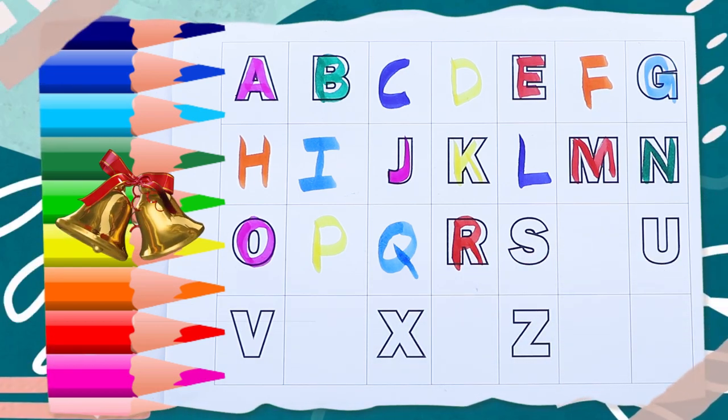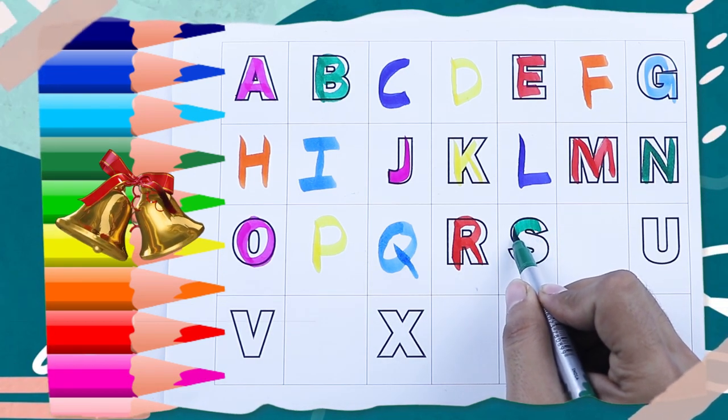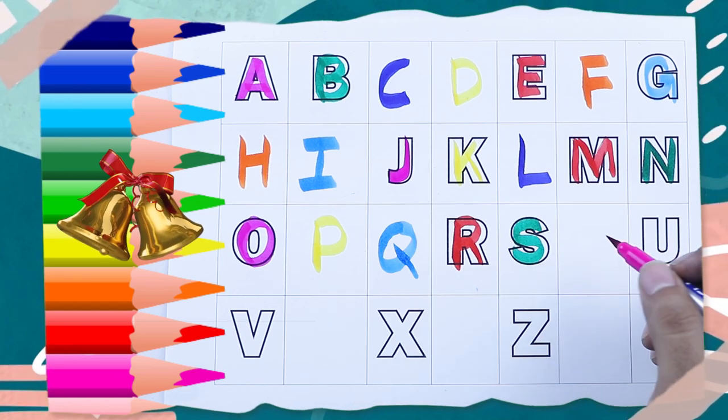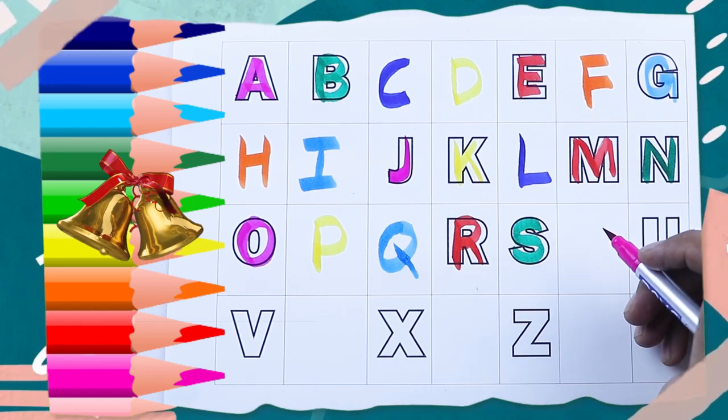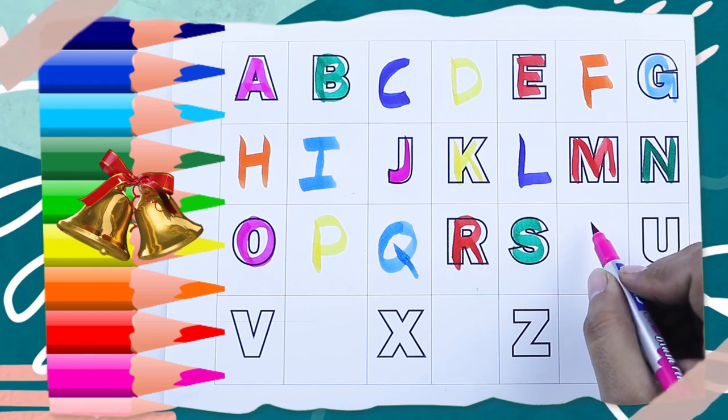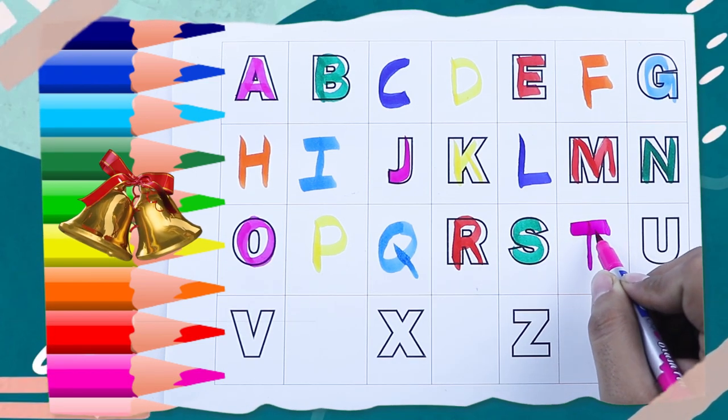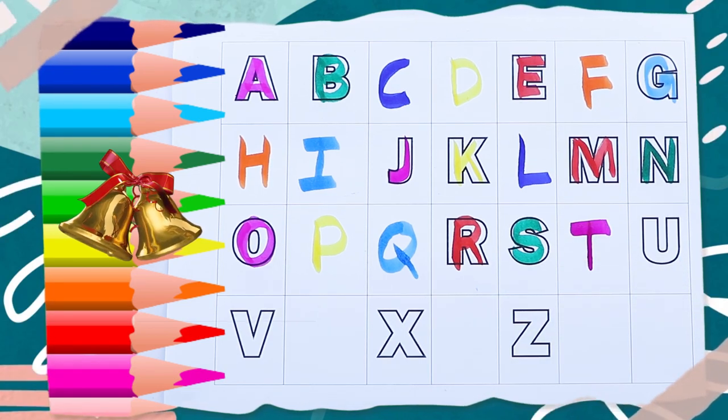Green color, S, S for sheep, capital S. What's the next? Next, next is, yes, tell me, right. T, T for tiger.